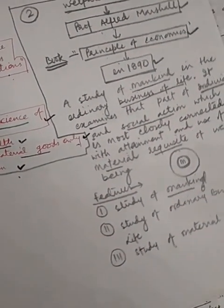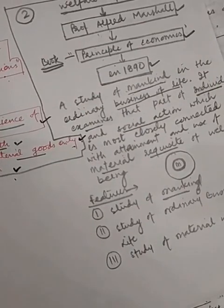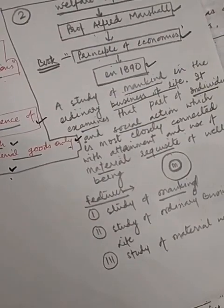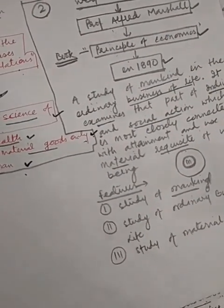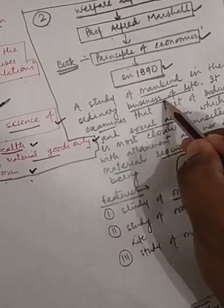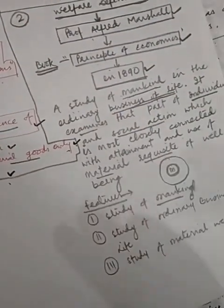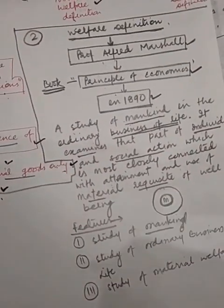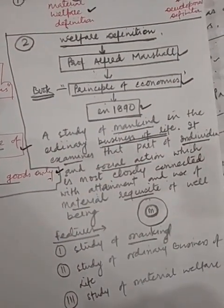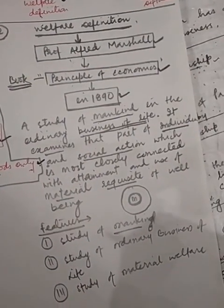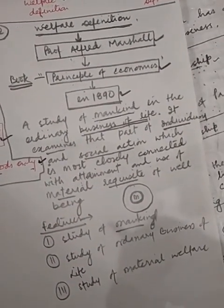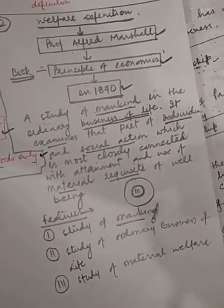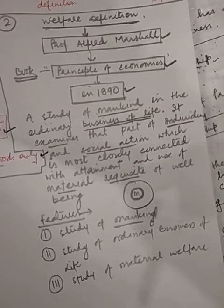Every person in the study of ordinary business of life acts mainly to earn and collect wealth, and spends those earnings to get maximum satisfaction. Every person wants to collect more and more money, and after earning that money, he wants to spend it for their satisfaction and their needs. Marshall called this activity the ordinary business of life.